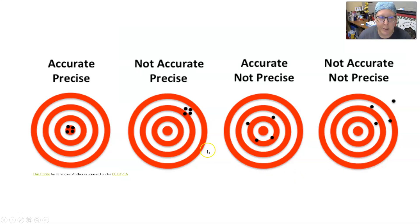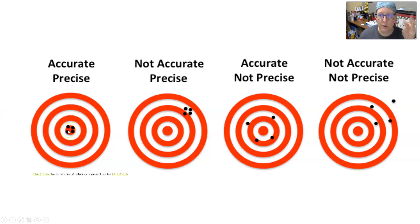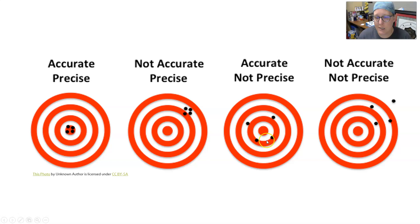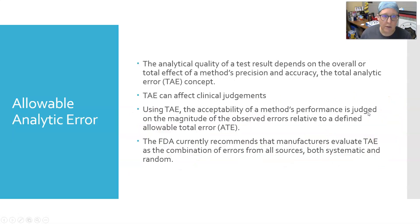Four target diagrams illustrate the combinations: the first is accurate and precise — hitting dead center with all points clustered together. The second is not accurate but very precise — off target but tightly grouped. The third is accurate but not precise — points scattered around center but not grouped. The fourth, which you definitely don't want, is neither accurate nor precise — off center and scattered.